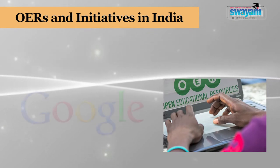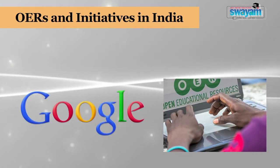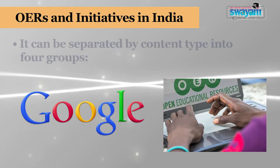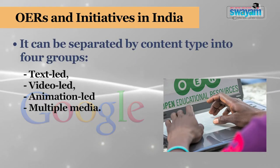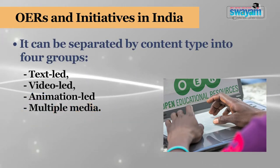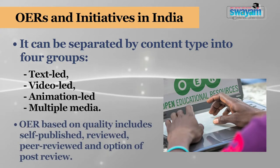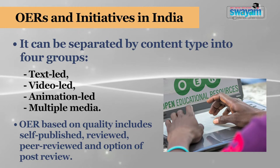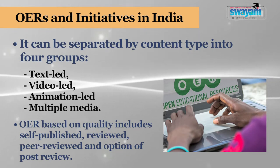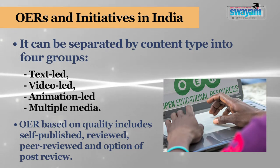Indian OERs can be separated by content type into four groups: text-led, video-led, animation-led, and multiple media. Based on quality, they include self-published, reviewed, peer-reviewed, and options for post-review. They are also categorized based on authorship — whether the content is created individually, open-authored, or as collaborative work.